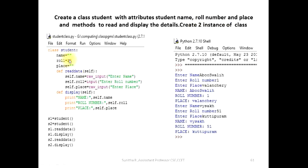Create the class. We will call student. Name, roll number, place. Read data, display. Read data: self.name, self.roll number, self.place — input for each. Then define display — we can display the name, roll number and use a common display function.